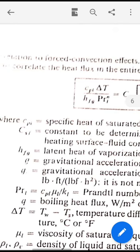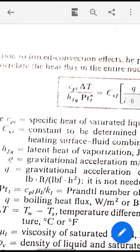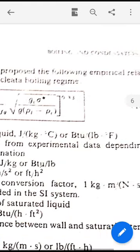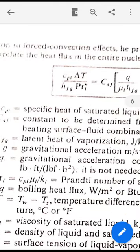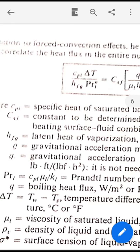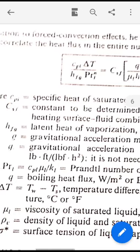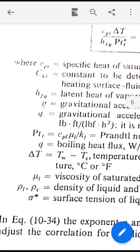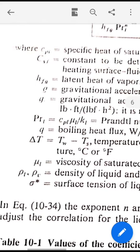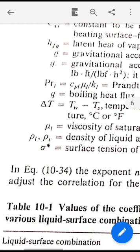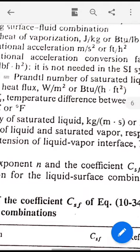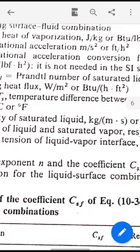What is CPL? CPL is the specific heat of saturated liquid. CSF is a constant whose value depends upon the heating surface and fluid combination. HFG is latent heat of vaporization and G is gravitational acceleration. PRL is Prandtl number of the liquid. Q is heat flux, boiling heat flux. Delta T is the temperature difference between the wire and the saturated water. Mu L is viscosity of saturated liquid. Rho L and rho V are the density of liquid and vapor, saturated liquid and saturated vapor. And sigma dash is the surface tension of liquid-vapor interface.